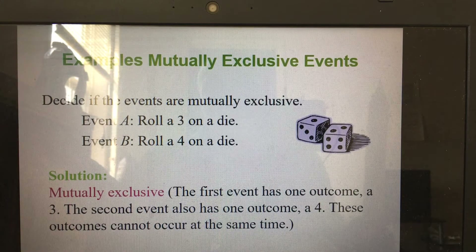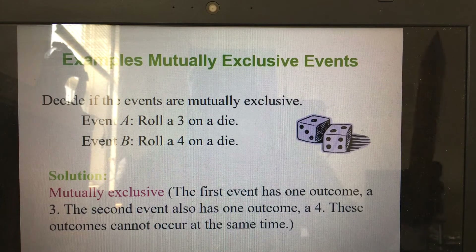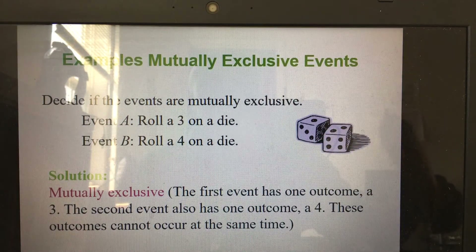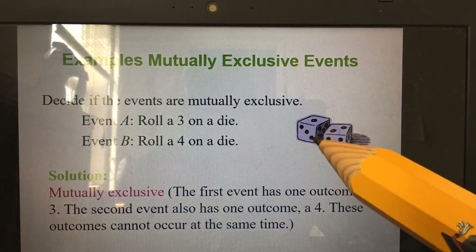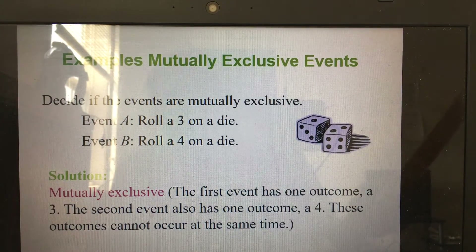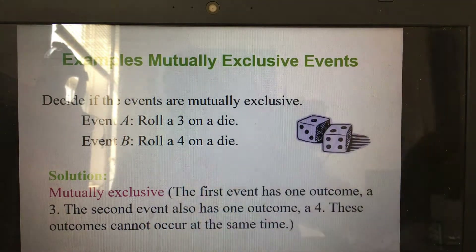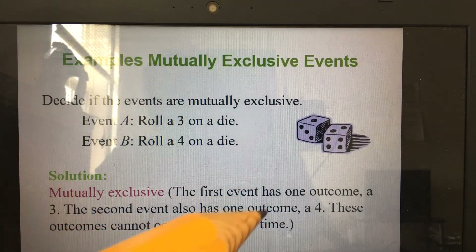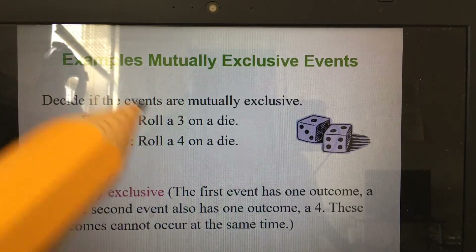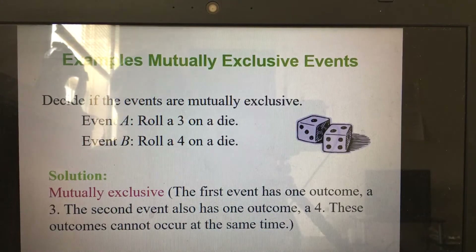If you are rolling only one die, then these events are mutually exclusive because event A — rolling a 3 — and event B — rolling a 4 — cannot occur at the same time. If there are two dice it is possible, but with only one die, a 3 and a 4 can only occur separately. You cannot get a 3 and a 4 on the same face at the same time, so these two events are mutually exclusive.